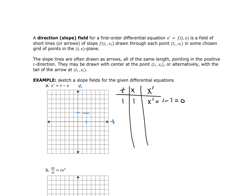Next I choose T equals 0, X equals 1. So I'm looking at the point (0, 1). This gives me X prime equal to 0 minus 1, which is negative 1. So I would draw a slope of negative 1 there, about the same length as before.